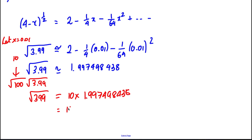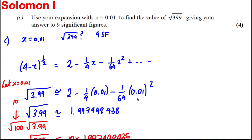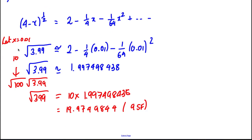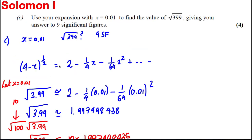Multiplying by 10 gives us 19.97498438. To 9 significant figures: 1, 2, 3, 4, 5, 6, 7, 8 — and the next digit is 4, so rounded to 9 significant figures we get 19.9749844. So if you let x equal 0.01, you get the square root of 3.99 from the binomial expansion, then multiply both sides by the square root of 100, which is 10, to find the square root of 399.